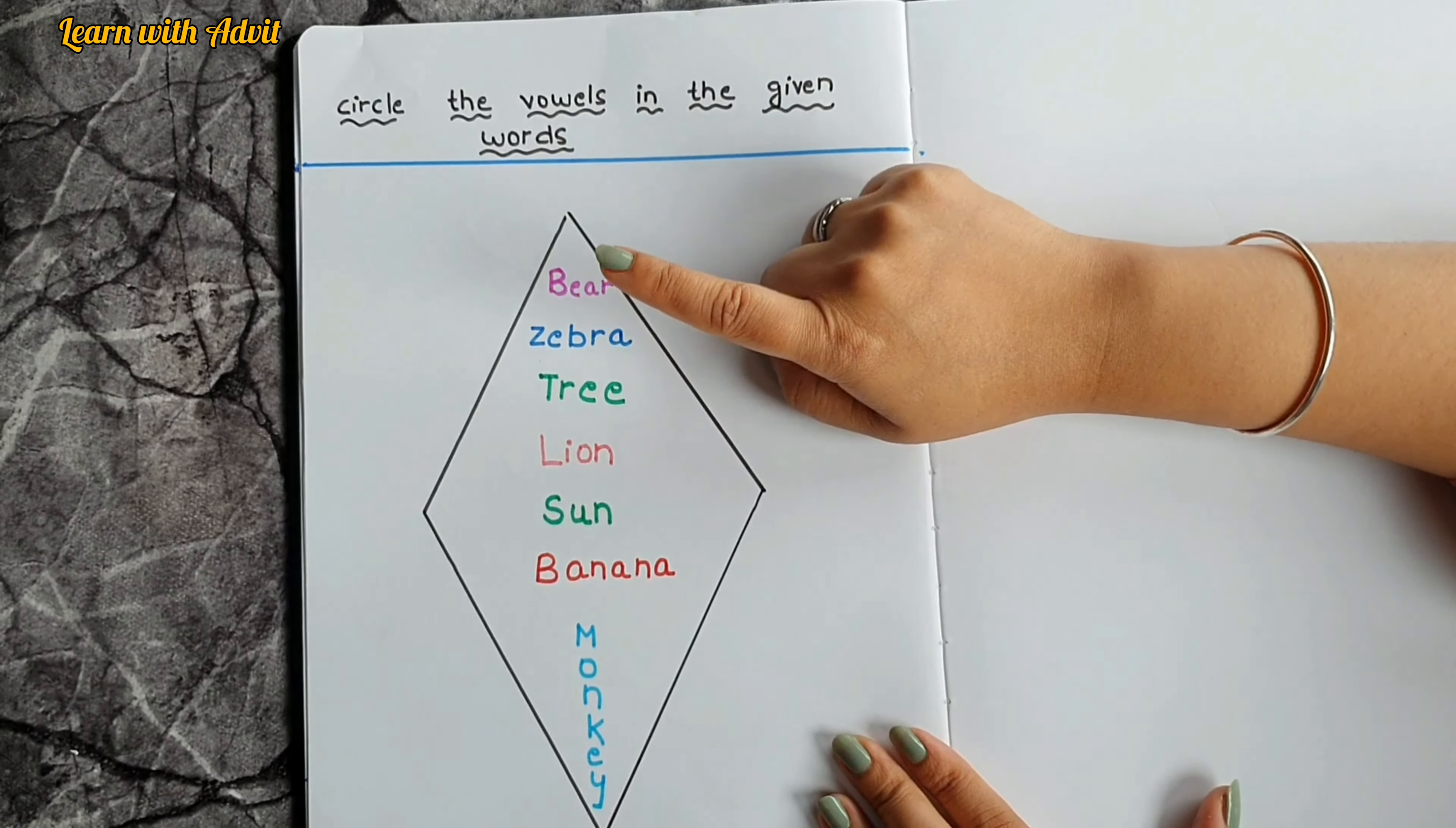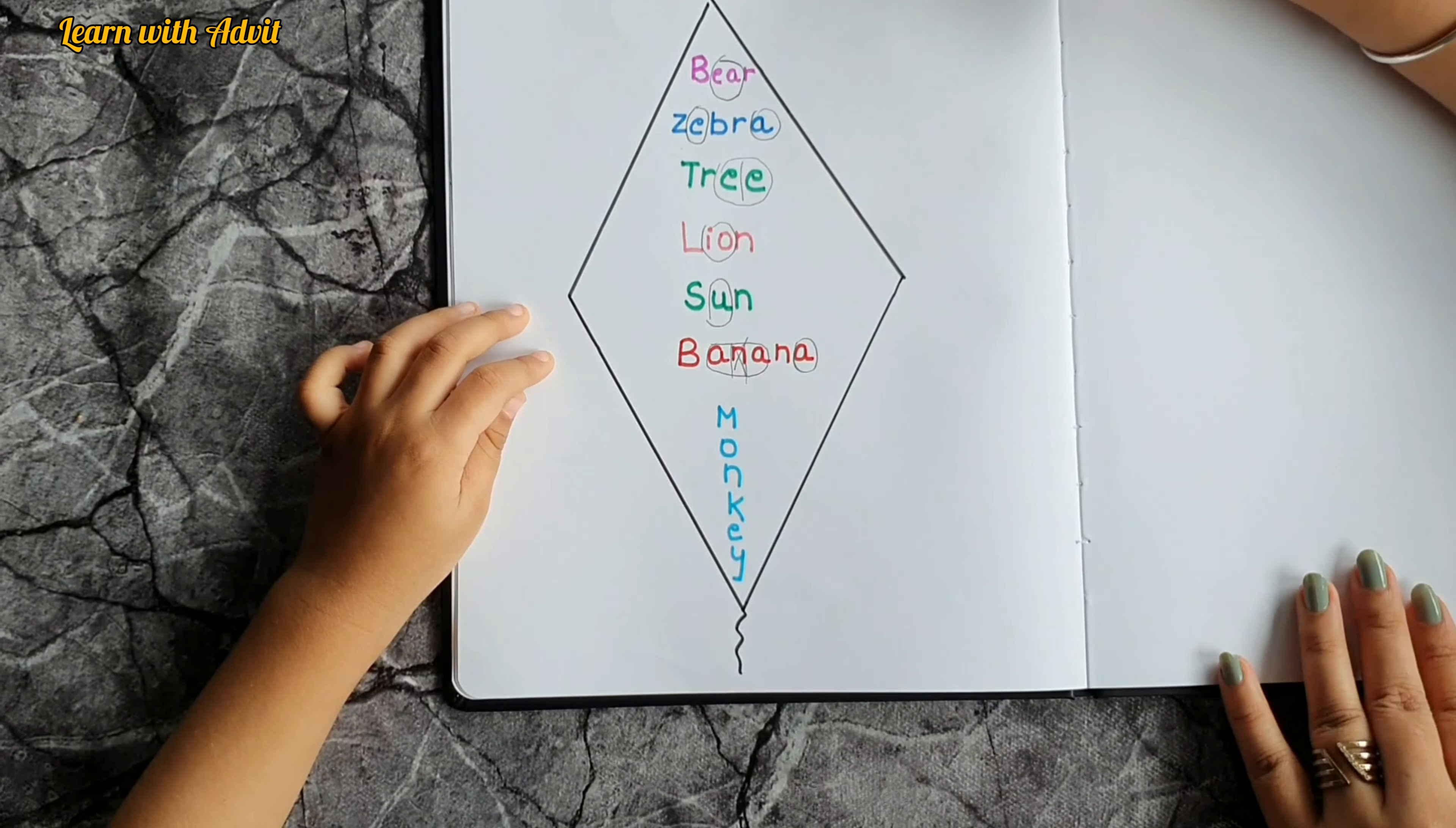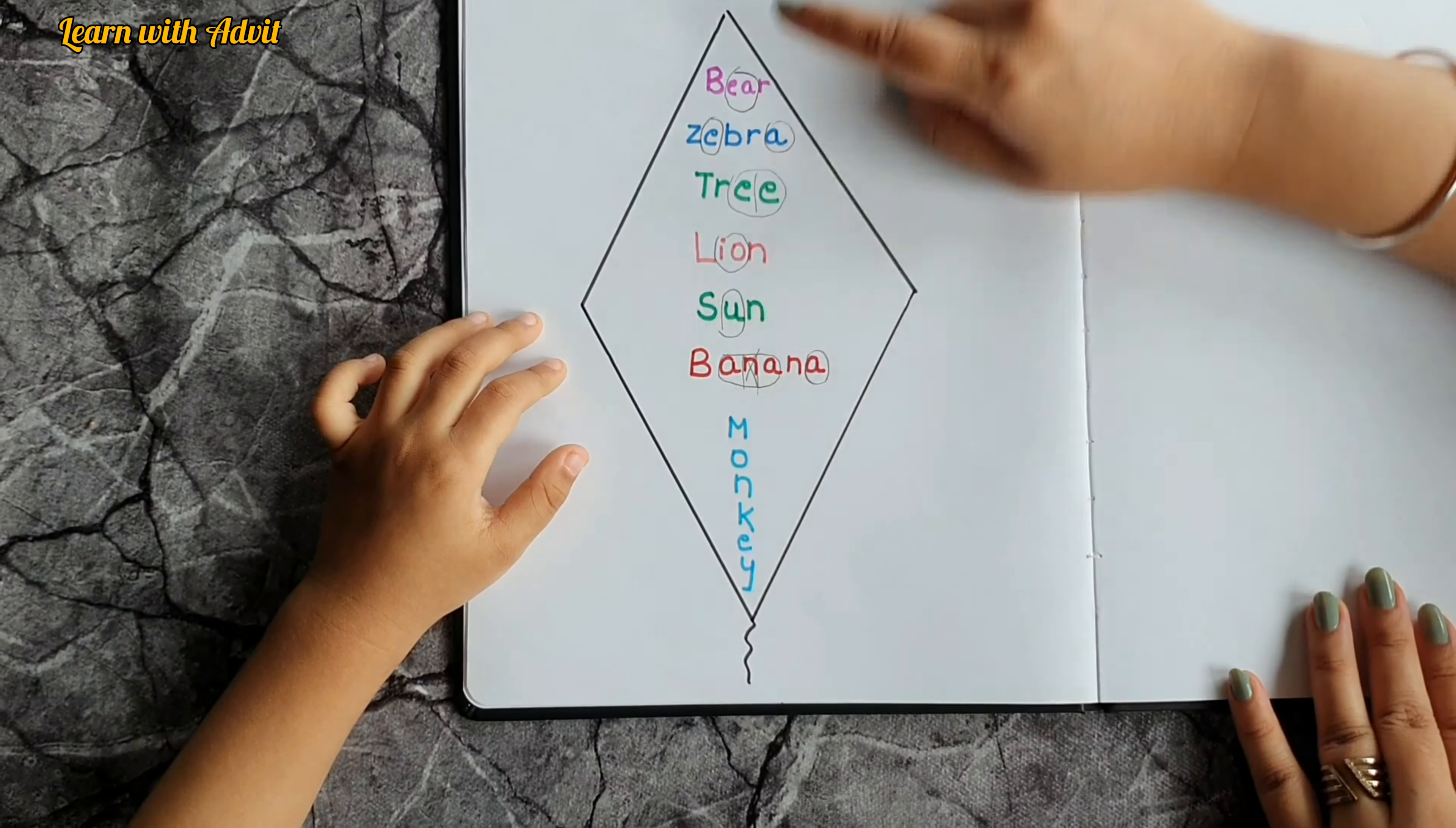Banana, 'a' and 'n', 'a' and 'n' and 'a'. There's lots of them, no this is wrong, you don't have to circle 'n'. Oh yes. And 'a', yeah now it's correct. So the last one, what is the word? Monkey is on a straight line, come on do it. 'O', 'e'. Those are the vowels, very good.